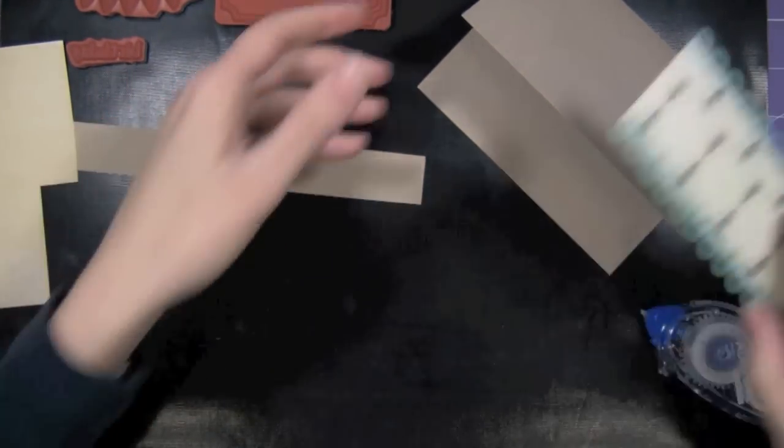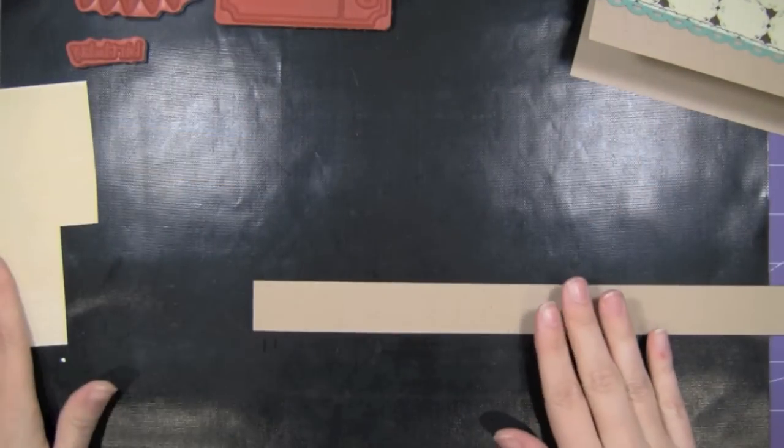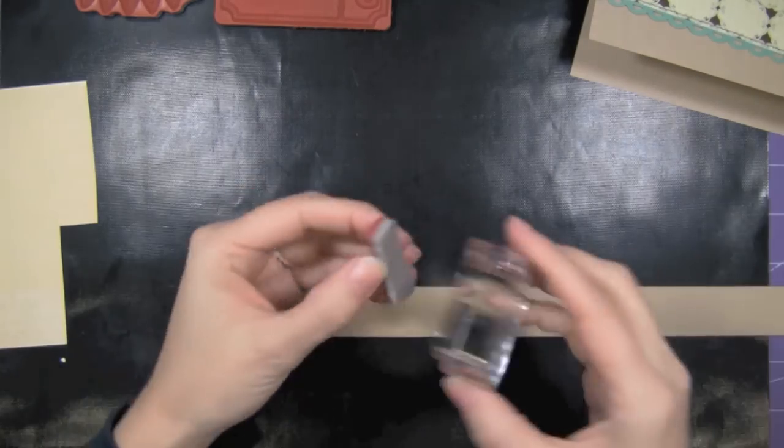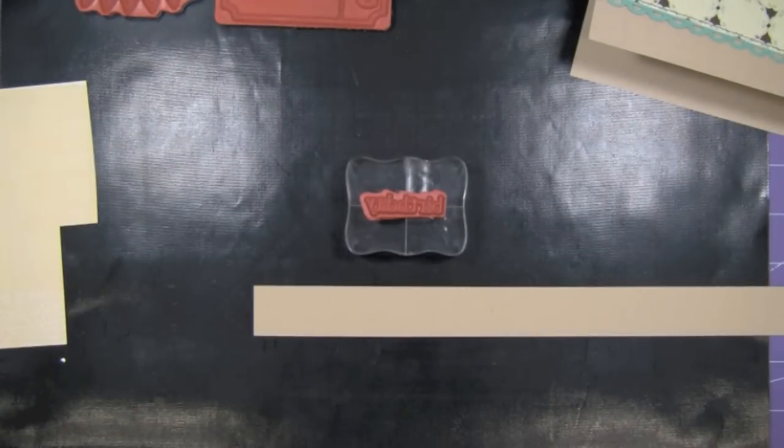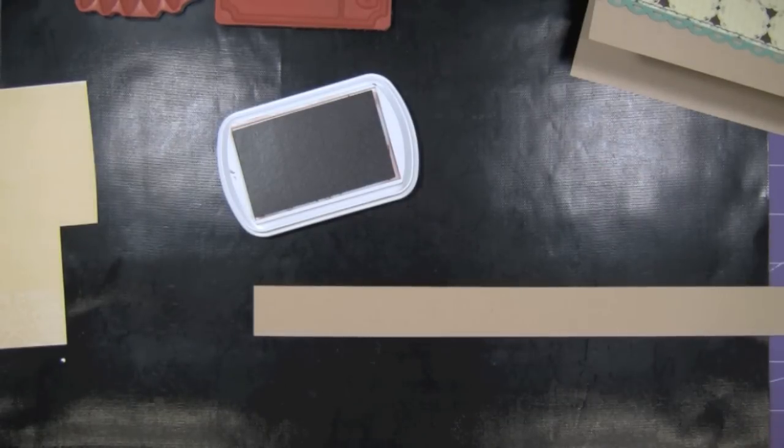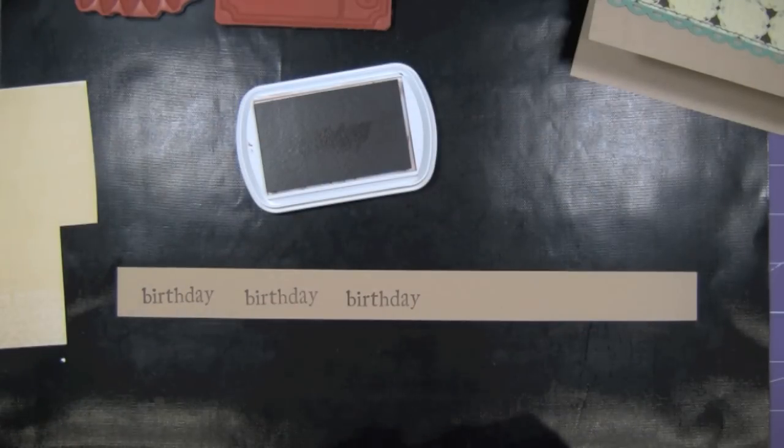Okay. So now we have that done, I'm just going to go ahead and set that aside and we'll work on that later. Let's do some stamping. The first thing is I just want to grab this birthday stamp and get it out of the way. I'm going to use some dark brown chalk ink. Stamp it right there. And then I'm going to use a die cut to cut that out.